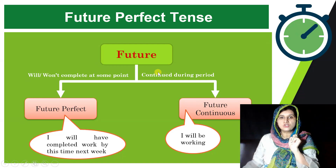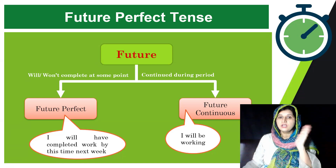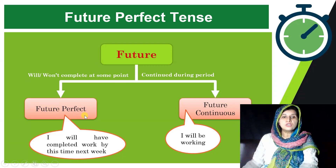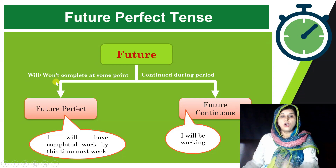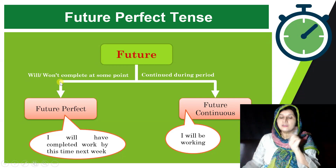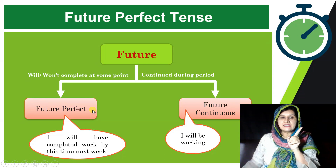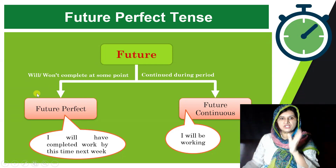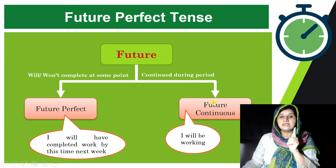Future Continuous Tense talks about the continuity of an action in the future during a period. On the other hand, Future Perfect talks about any action that will or will not complete at some point in the future. So Future Perfect Tense is interested in either the completion or non-completion of a task.